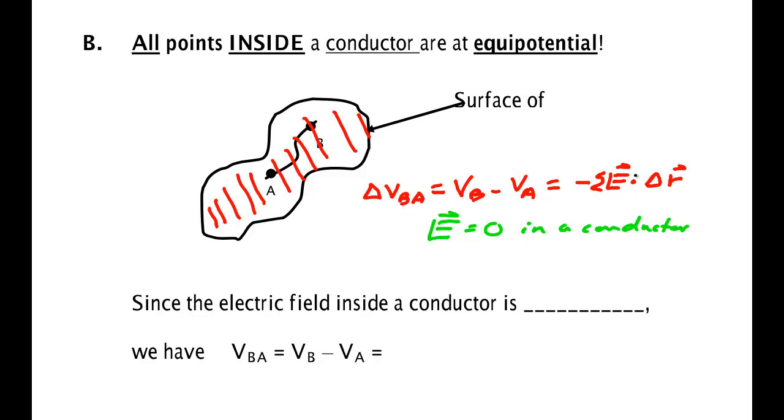This means there is no force on charges. If there is no force on the charge, then the force can't do any work. So since the field inside a conductor is zero, we have that the difference between the voltage at point B and point A is equal to zero.